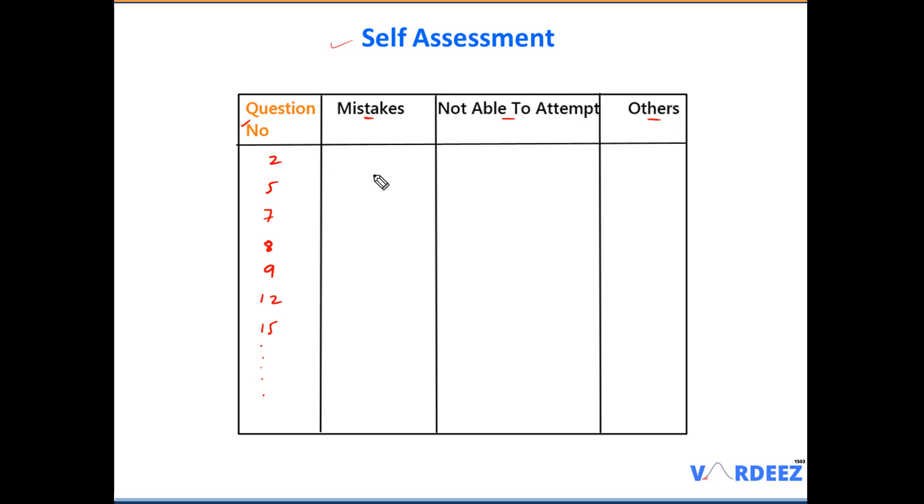I would like to give you one more example here and that is let's say that you were very confident about a particular question and you are sure that the answer choice has to be option D. But when you actually checked the solution, the answer was actually option A. Now though this is not a silly mistake, but still it's a mistake. So again we categorize in this particular column.